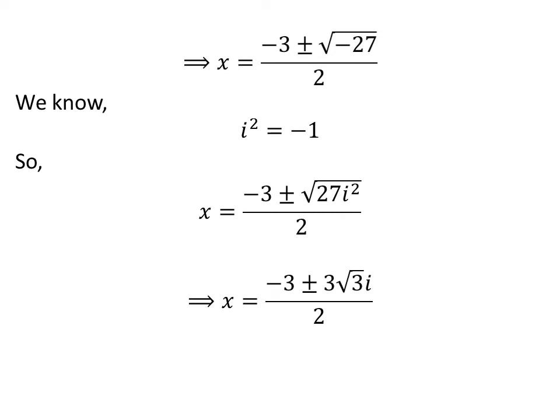As √27 = 3√3, this gives us x = (-3 ± 3√3·i) / 2.